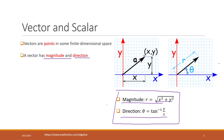For three dimensions or higher dimensions, we can also calculate the same thing using a similar formula. A scalar is just a value — it only has magnitude, but a scalar does not have a direction.